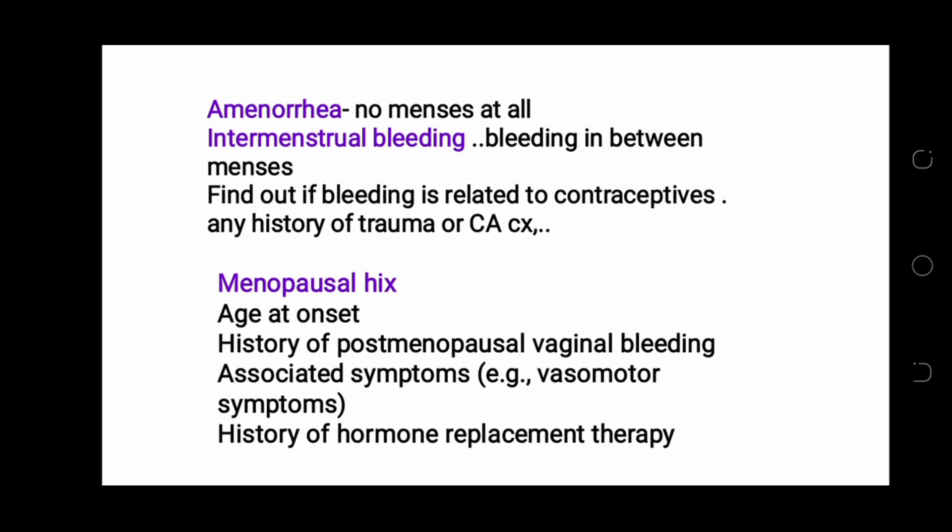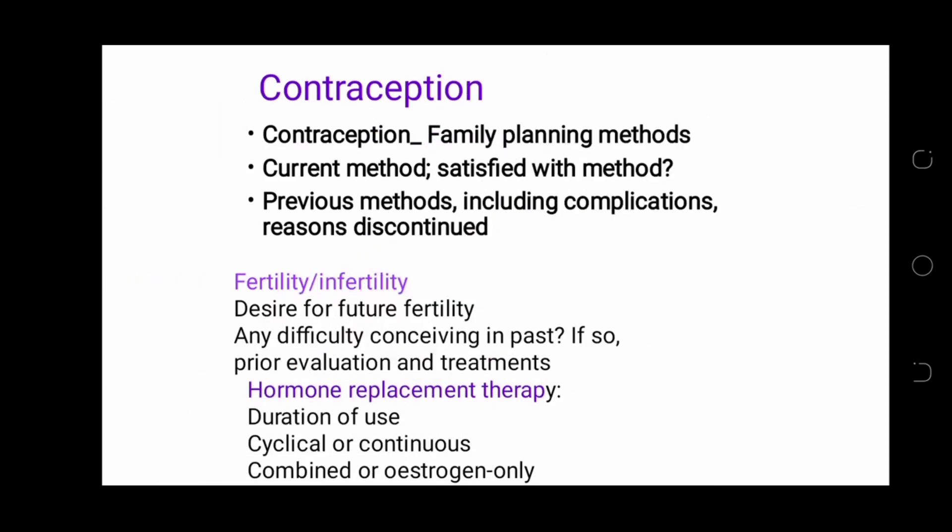For menopausal history, consider age of onset, history of postmenopausal vaginal bleeding, associated symptoms such as vasomotor symptoms like hot flushes, and fever. History of hormonal replacement therapy is very important.